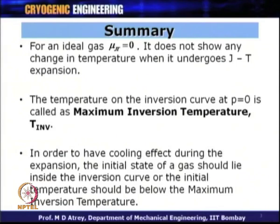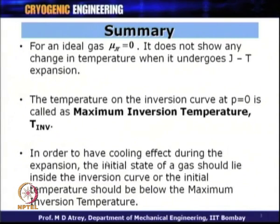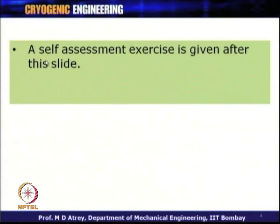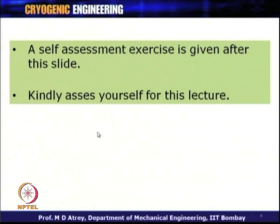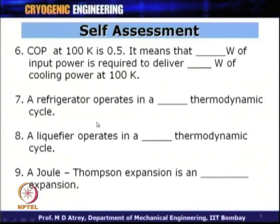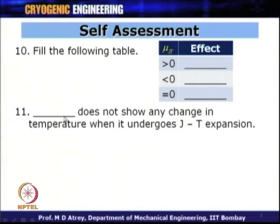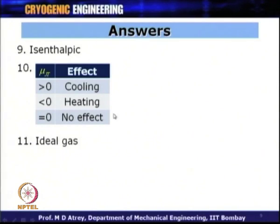In summary, to achieve cooling via JT expansion, the initial state of the gas must lie inside the inversion curve or below the maximum inversion temperature T_inv — only then will isenthalpic expansion result in cooling. Based on this lecture, a self-assessment exercise is provided. Please go through it, fill in the gaps, and tally your answers against those given at the end. Thank you very much.